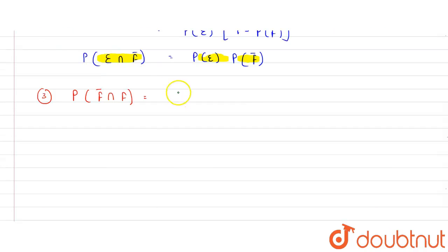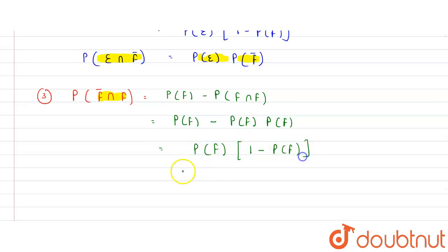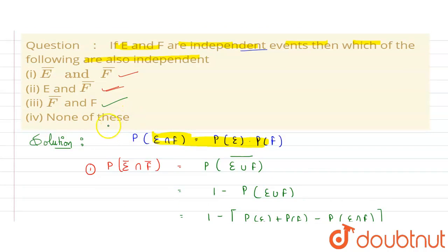For the third option, we check F complement and F. P(F' ∩ F) = P(F) - P(F ∩ F) = P(F) - P(F)·P(F). Taking P(F) common gives P(F)·(1 - P(F)) = P(F)·P(F'). So this can again be expressed as P(F')·P(F), meaning this pair is also independent. Therefore all three options — E' & F', E & F', and F & F' — are independent events, so the answer is that all three options hold.